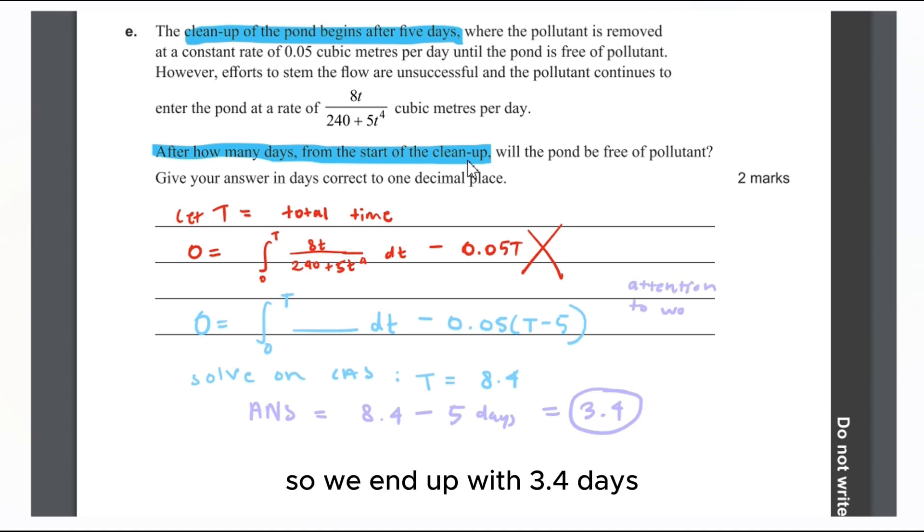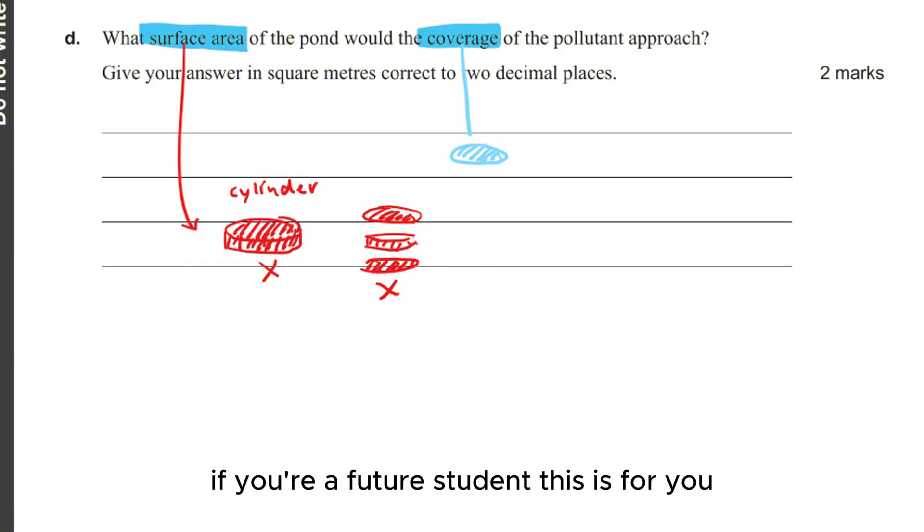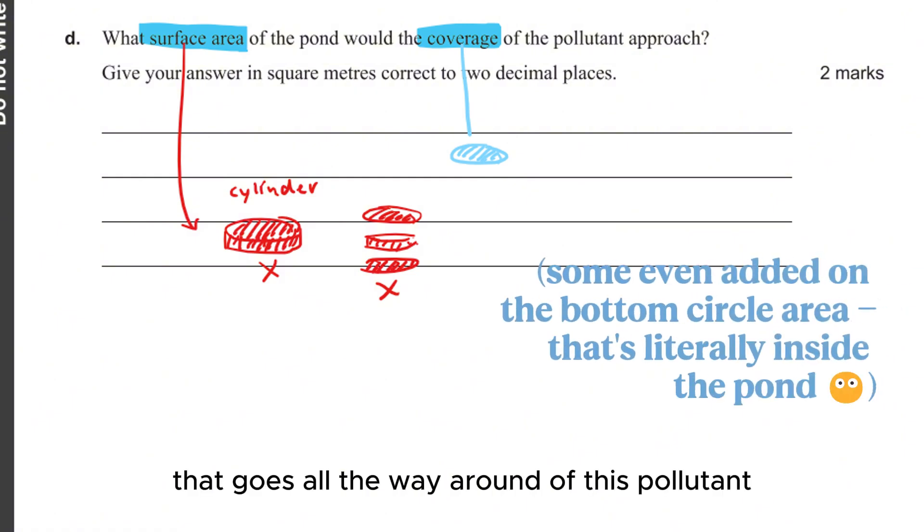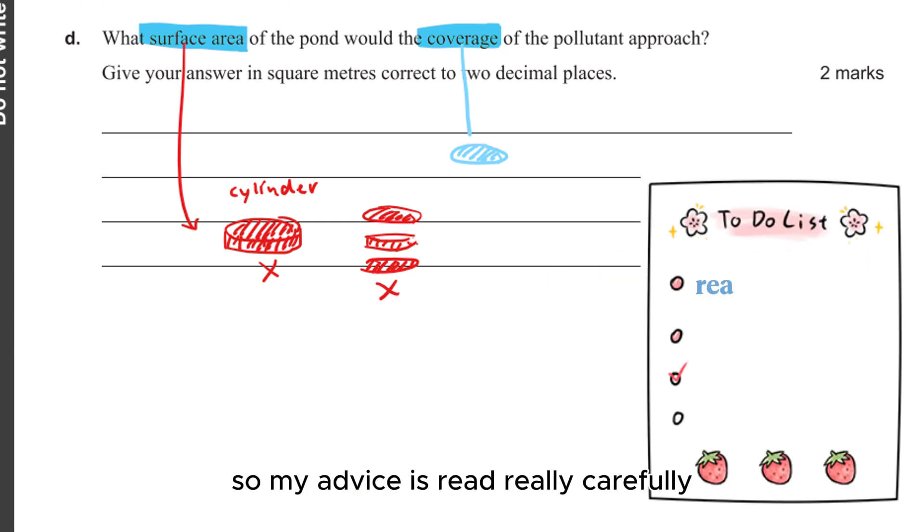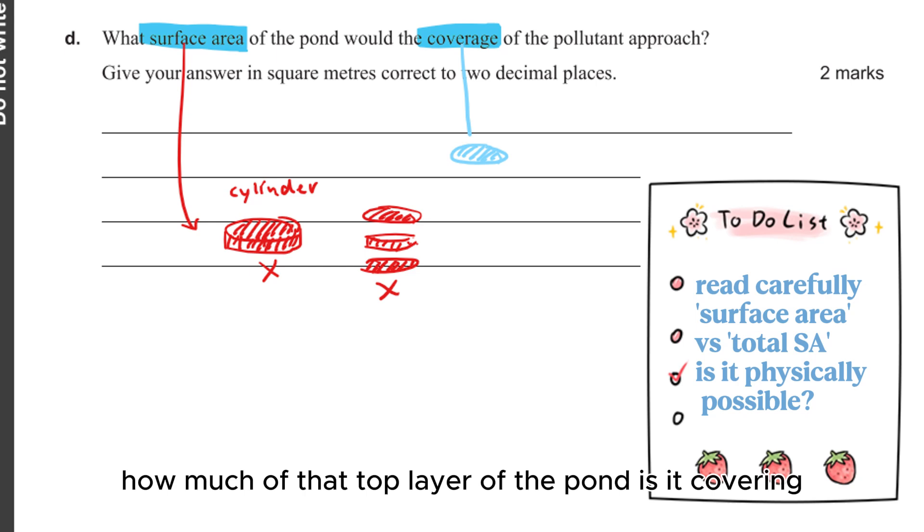If you're a future student, this is for you. A lot of people got this question wrong because they misinterpreted what it was asking by surface area and coverage. When I read it, I thought it was pretty straightforward. The coverage of the pollutant is only talking about that top circle, that top surface layer of the pollutant. But a lot of people thought that they also had to include the thin curved surface area that goes all the way around.